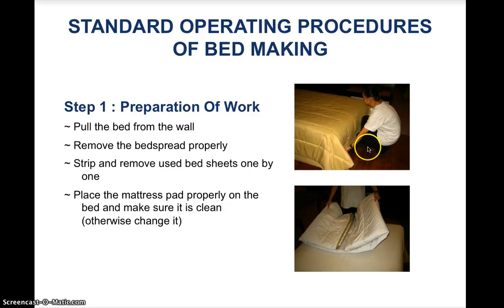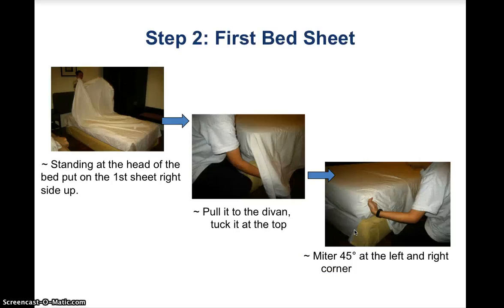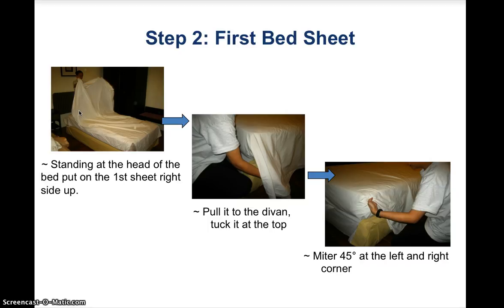Preparation: pull the bed away from the wall, remove the bedspread properly, and strip the used bedsheets one by one. Place the mattress pad properly on the bed and change it if not clean. For the first bedsheet, stand at the head of the bed and place the sheet right side up — the right side refers to the seam line facing down. Pull it to the divan, tuck at the top, and mitre at 45 degrees at the left and right corners.